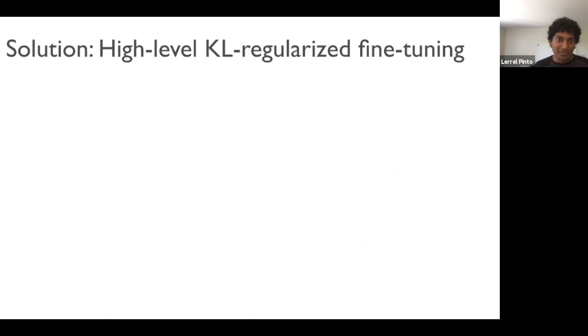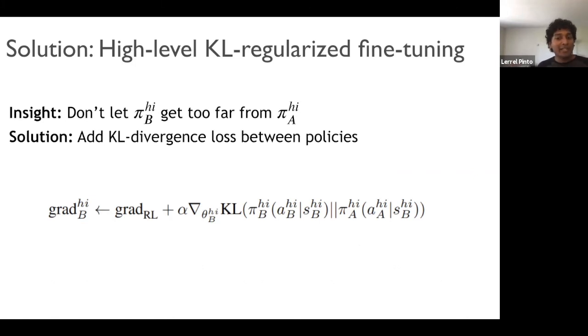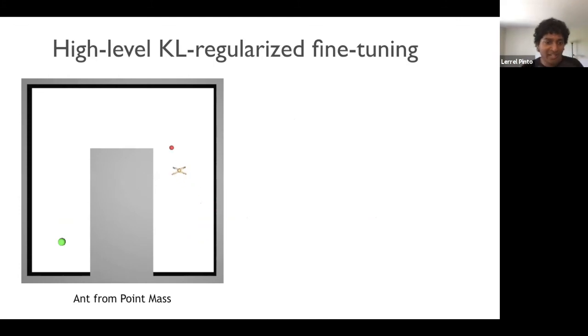So the key insight over here is that when you're doing fine-tuning, we have to regularize the fine-tuning. So to do this, the key insight is to make sure that agent B's high-level does not get too far from agent A's high-level. So the way we operationalize this insight is to add a KL divergence loss between the two high-level policies. So now for agent B, its gradient has a normal RL gradient, along with the KL term, which forces it to be close to agent A's high-level.